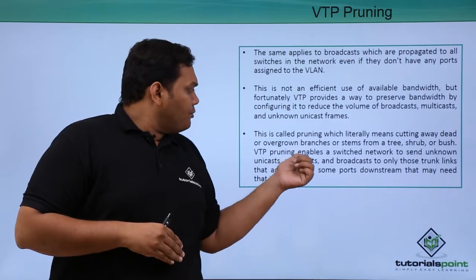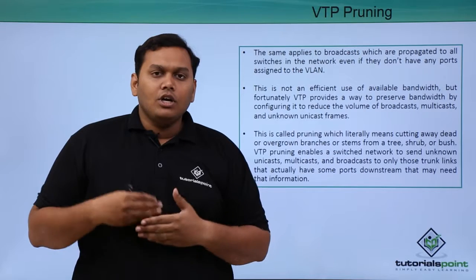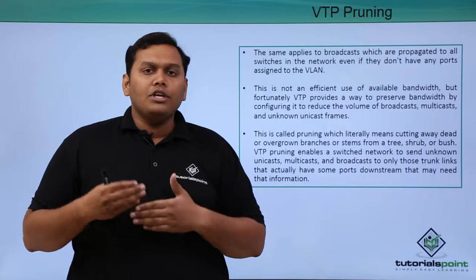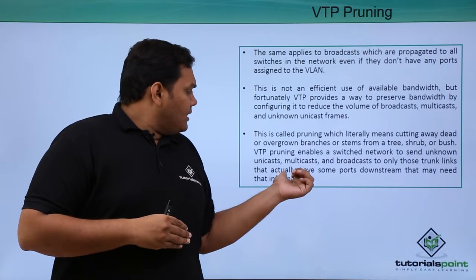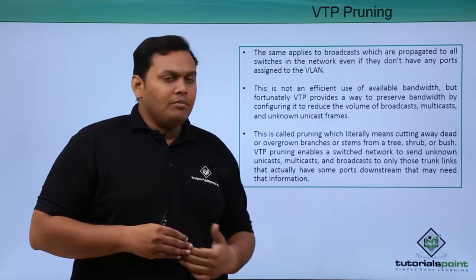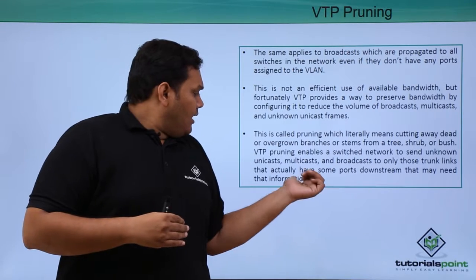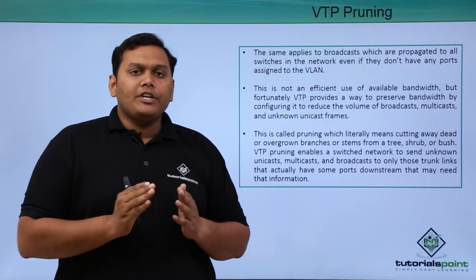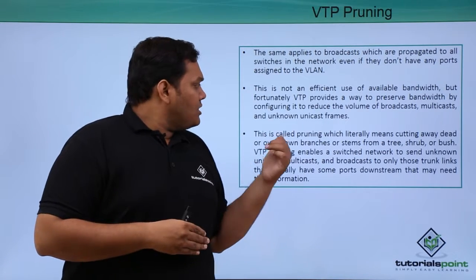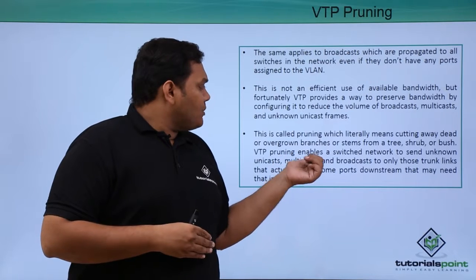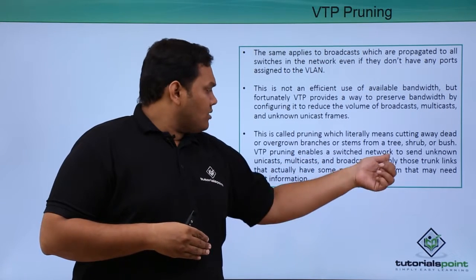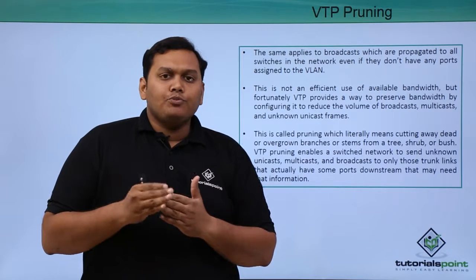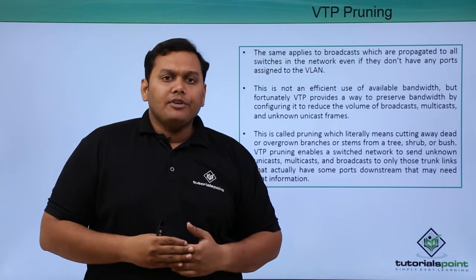In the same way, VTP pruning enables a switch network to send unknown unicast, multicast, and broadcast traffic only through those trunk links that actually have some ports downstream that need to know about that information. Traffic is passed only through those trunk links where it is actually needed. This is called VTP pruning.